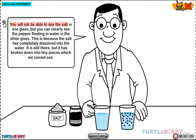You will not be able to see the salt in one glass, but you can clearly see the pepper floating in water in the other glass. This is because the salt has completely dissolved into the water. It is still there, but it has broken down into tiny pieces which we cannot see.